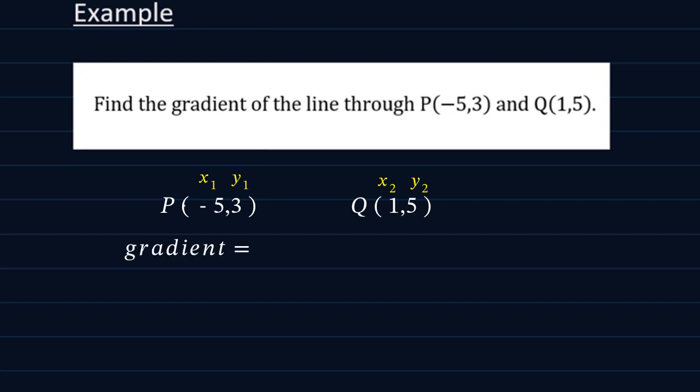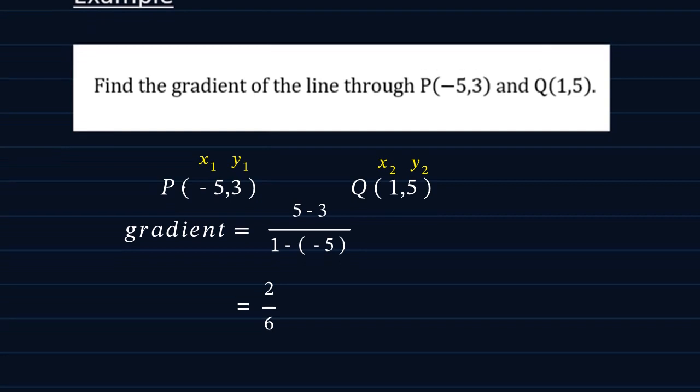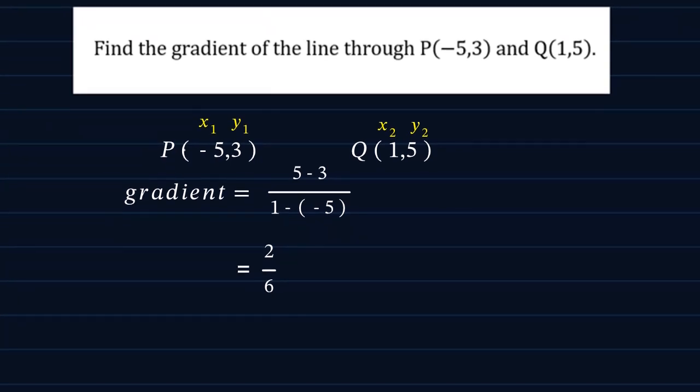So to calculate the gradient we will say y2 minus y1 which is 5 minus 3, divided by x2 minus x1 which is 1 minus (-5). If we simplify this we will get 5 minus 3 is 2, and this divided by 1 minus (-5) which is 6. Therefore if we reduce this to lowest terms then the gradient of the line comes out as a third and that's the answer.